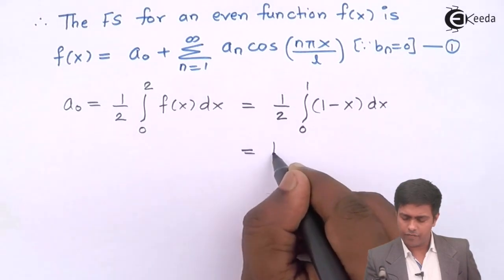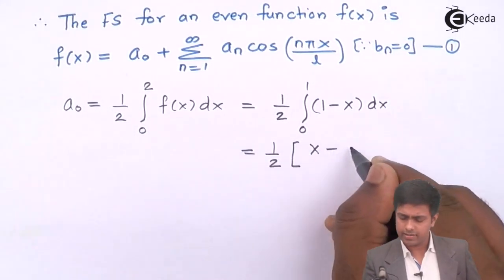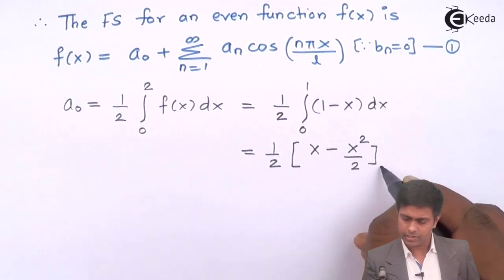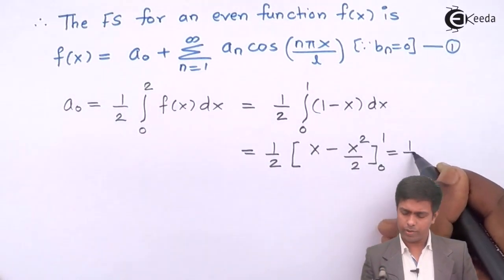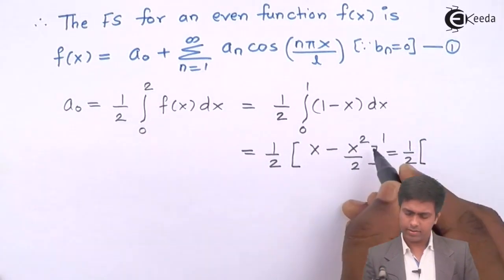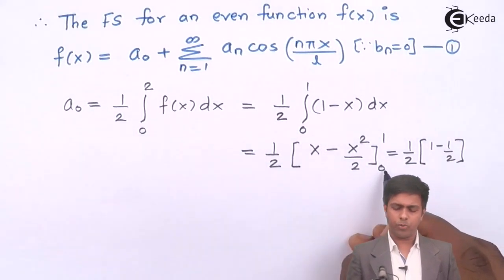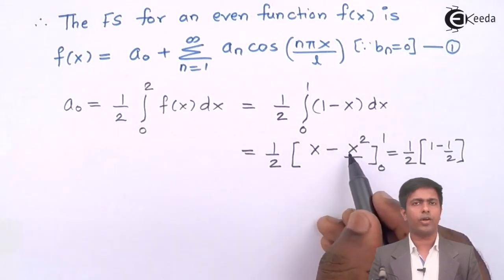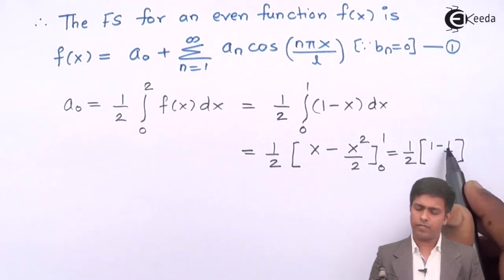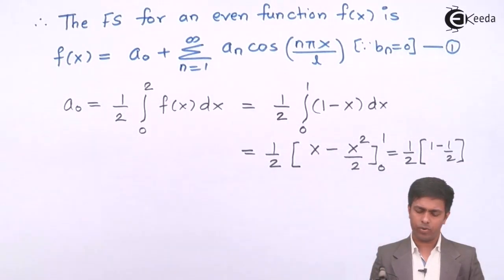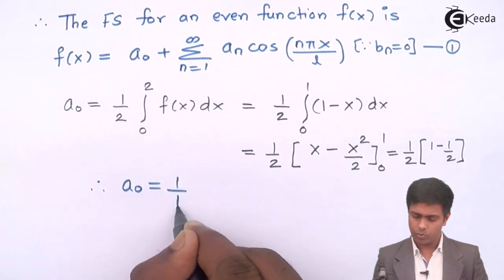Evaluating the integral: (1/2)[x - x²/2] from 0 to 1. Substituting x=1 gives (1/2)(1 - 1/2) = (1/2)(1/2) = 1/4. Substituting x=0 gives 0. Therefore, a0 = 1/4.